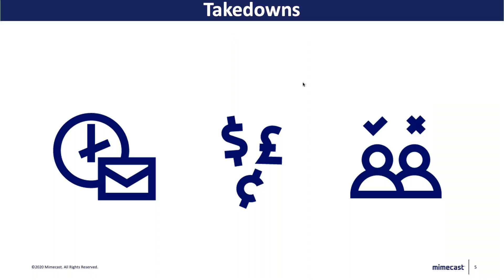The core things we want to consider here are: one, how do we have visibility of these attacks before they do damage? And when you do find these websites, you want to make sure they're taken offline before actual damage is done. Your website is an extension of your brand — if your website is exploited, that means your brand identity is being exploited too. Couple that with governance around GDPR and the list goes on. Takedowns themselves are not straightforward — they can be very time consuming. You may need to liaise with different departments and approach hosting providers with evidence of malicious activity.